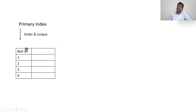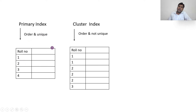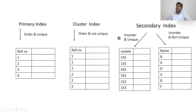In primary index, the key will be ordered and unique. Ordered means either ascending or descending, and unique means values do not repeat. In cluster index, the data is in order — one after two after three — but the values are not unique; you can see values repeating. In secondary index, the data is unordered and unique, or sometimes unordered and not unique. Secondary index is especially used for huge data to reduce search time.